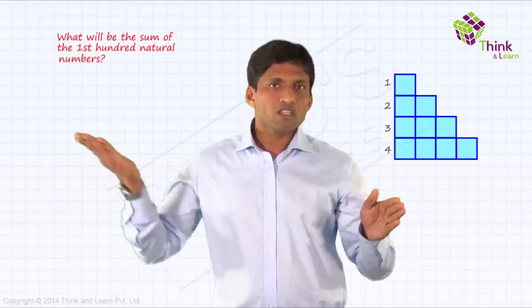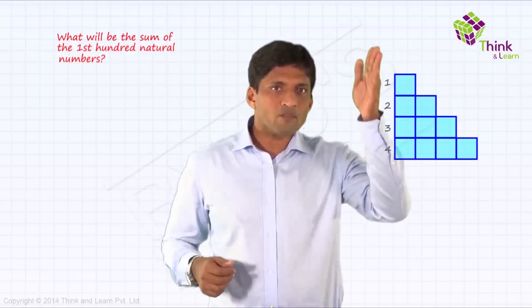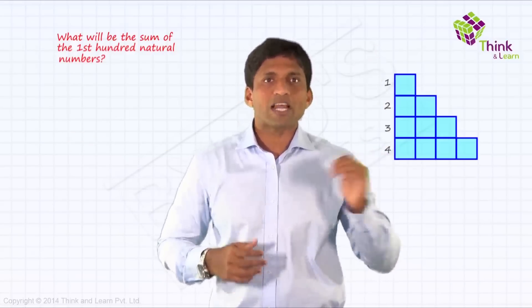So that's 1, 2, 3, 4. Instead of writing 1, 2, 3, 4, I am writing 1, 2, 3, 4 like this in this diagram.